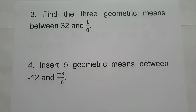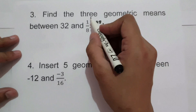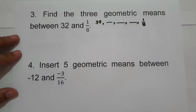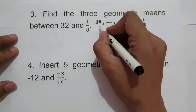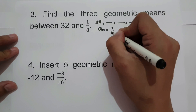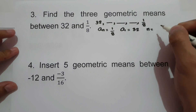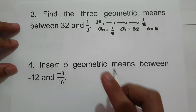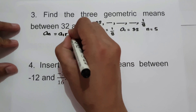For the next example, find 3 geometric means between 32 and 1/8. We write the sequence as 32, blank, blank, blank, 1/8 — inserting 3 geometric means. Let us identify the given: a_n is the last term, 1/8; a_1 is the first term, 32; and n is the number of terms, which is 5. The formula is a_n equals a_1 times r raised to n minus 1.